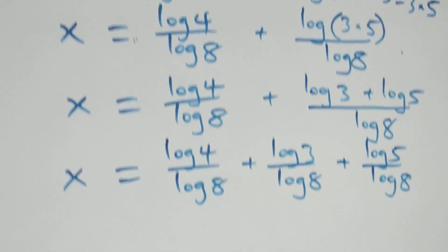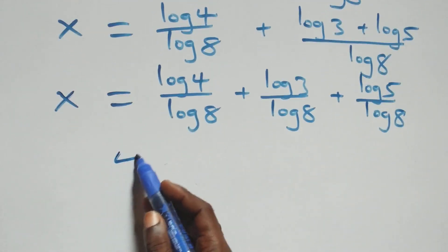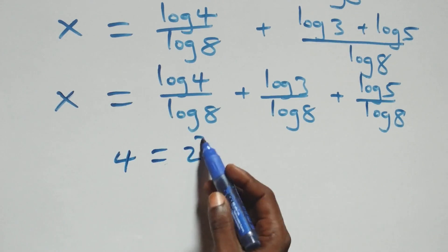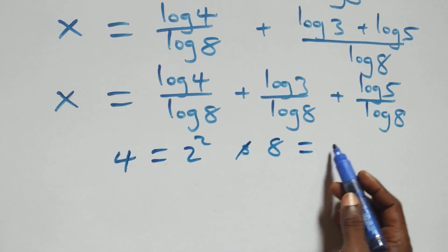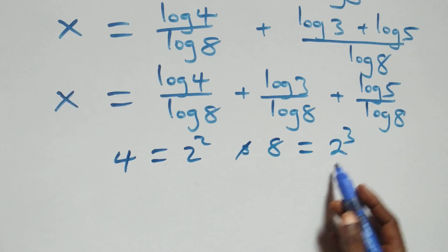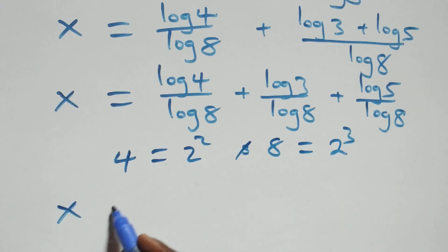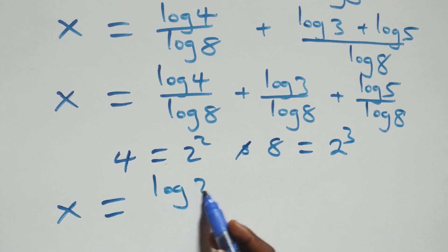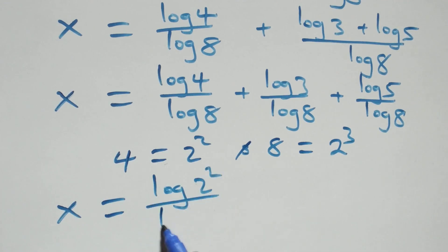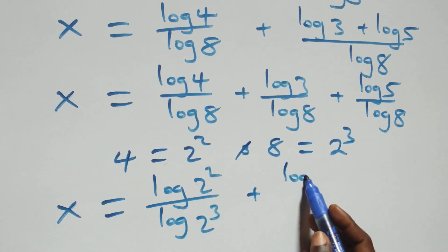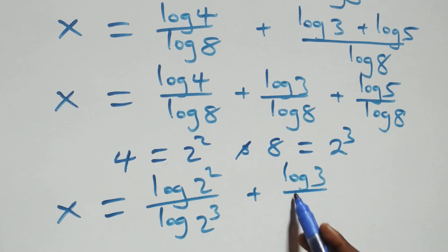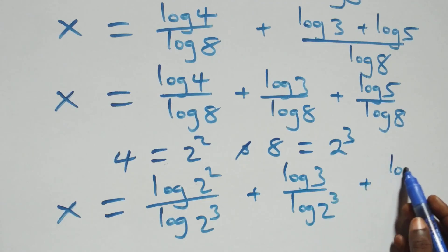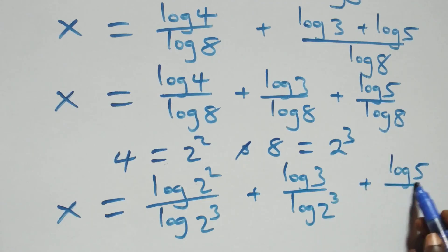Also here we can write 4 as 2 times 2, which is 2 squared, and also 8 as 2 times 2 times 2, which is 2 cubed. So what we have becomes x equals to log(2 squared) over log(2 cubed) plus log 3 over log(2 cubed) plus log 5 over log(2 cubed).